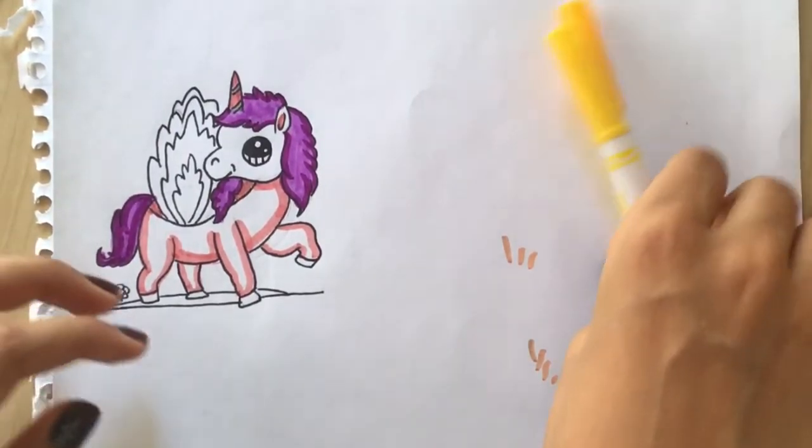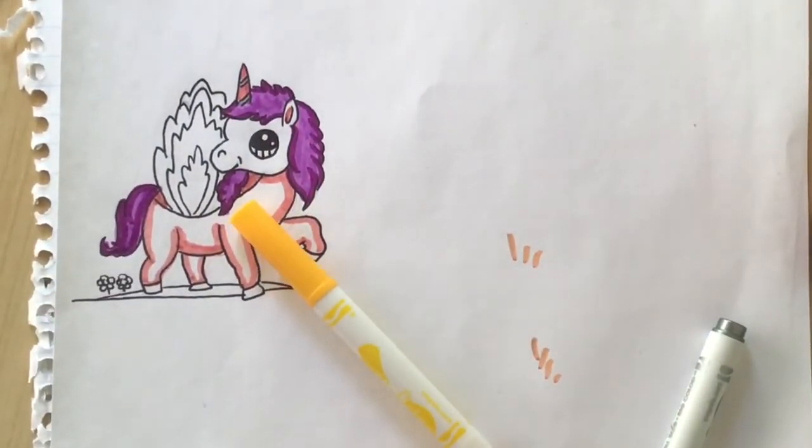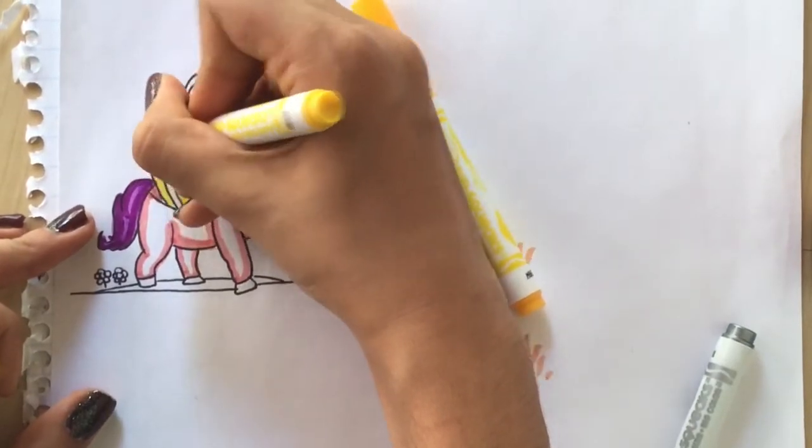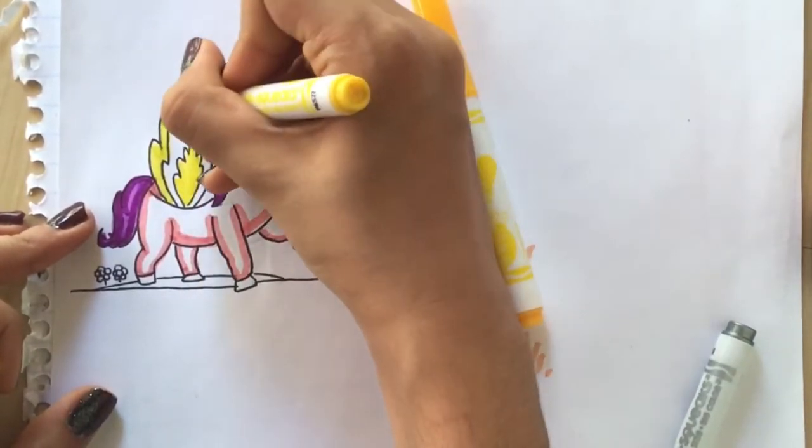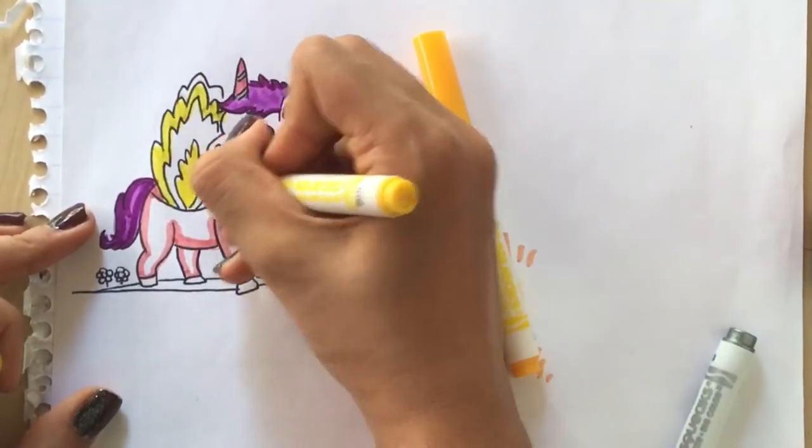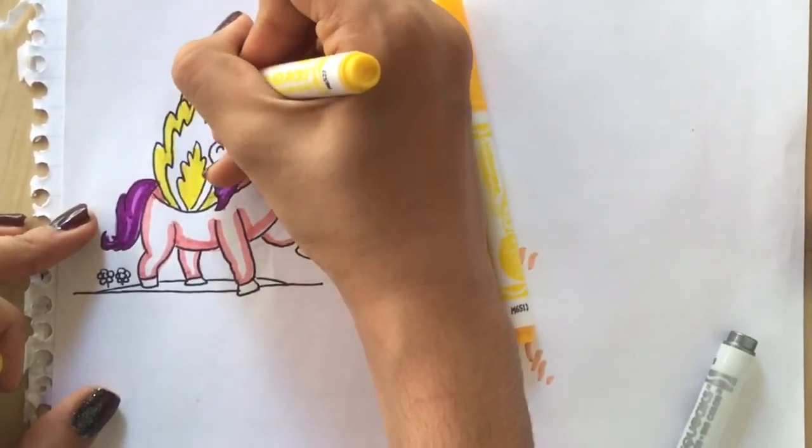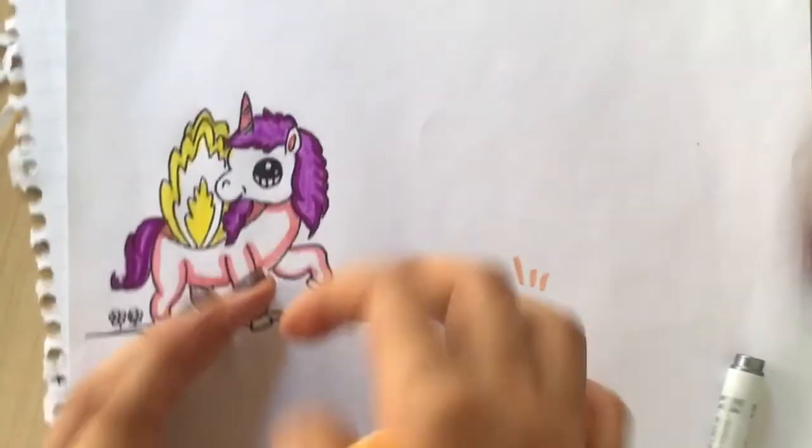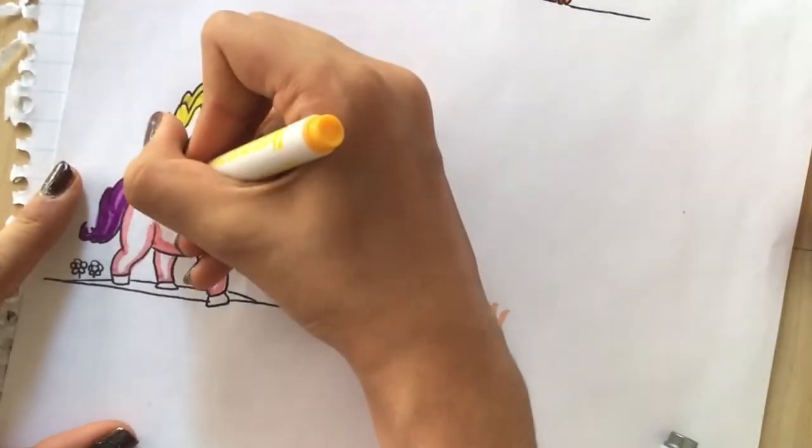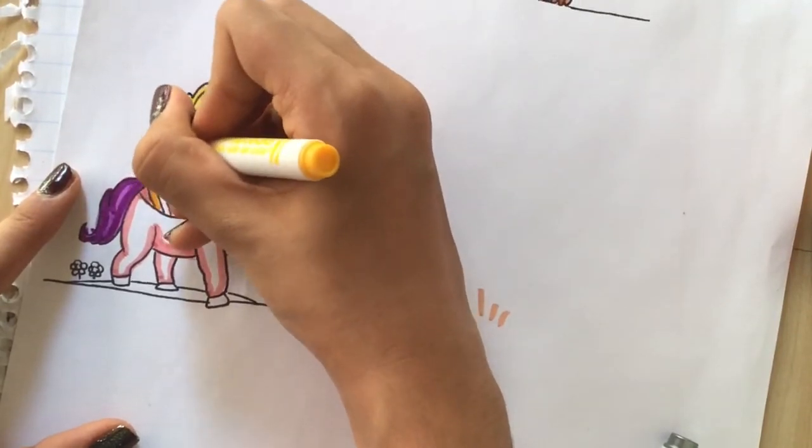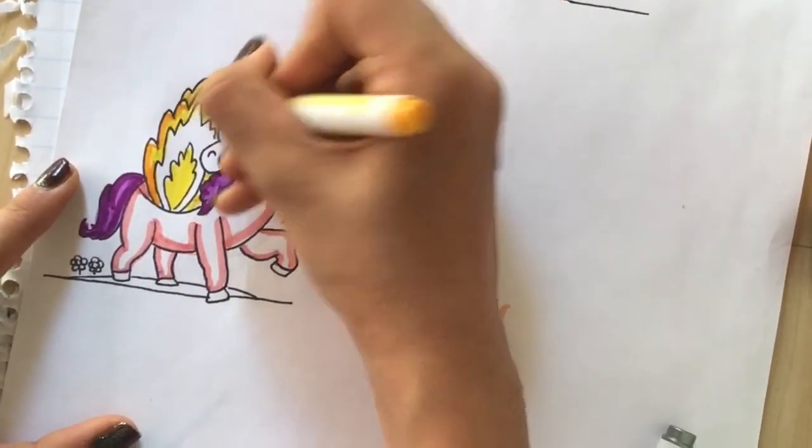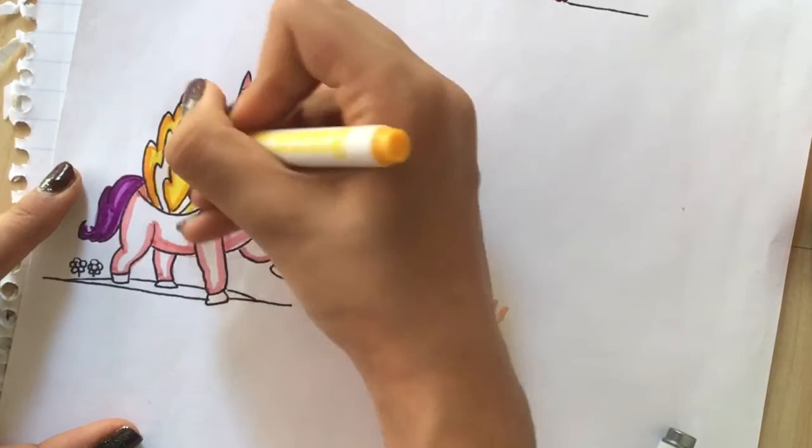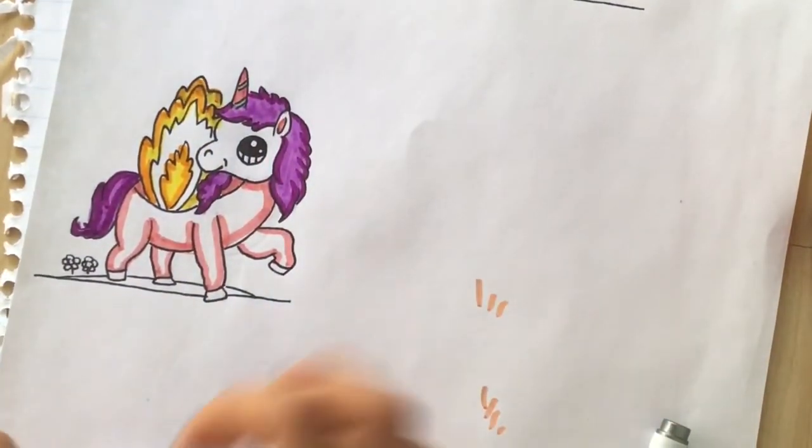Now the wings are going to be really simple. Use the Small Fry Yellow to color every other part, and then the darker one for shadow.